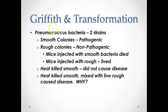The smooth colonies, sometimes called S cells or the S strain, are pathogenic — meaning they cause disease. The rough colonies are non-pathogenic and completely harmless. You can inject rough colonies all year long and you will not get pneumonia because they are non-pathogenic.